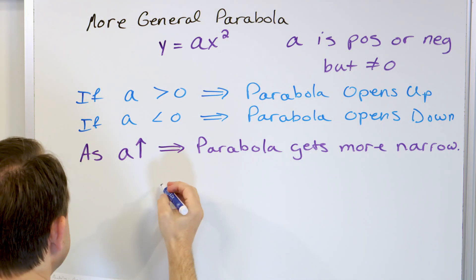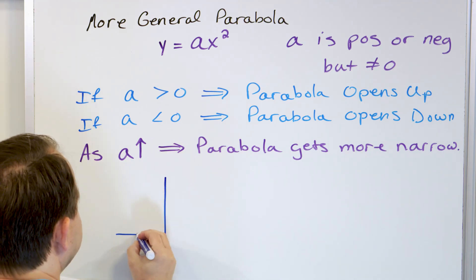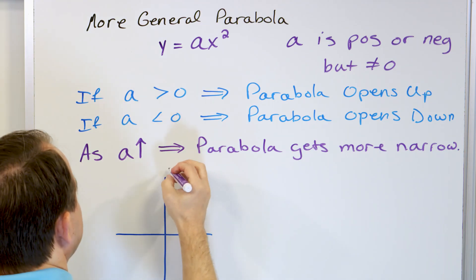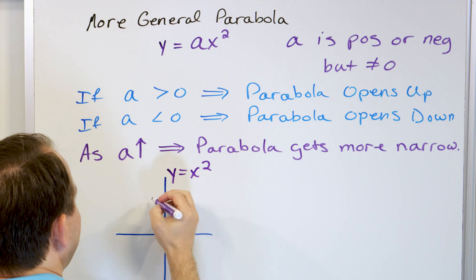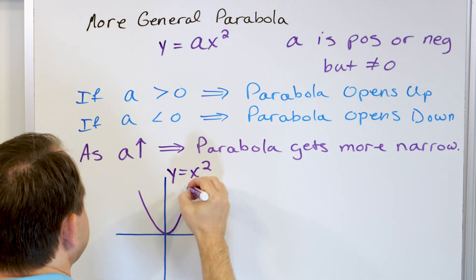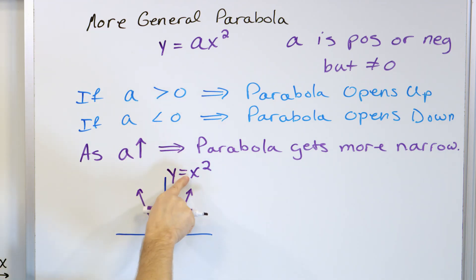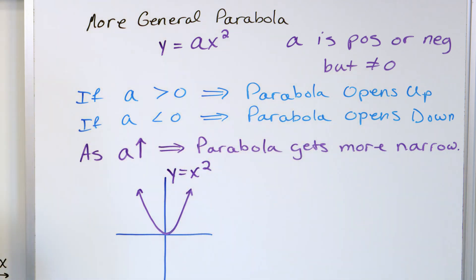Let's start with the basic parabola: y is equal to x squared. This parabola is that basic parabola that opens upward, because there's an invisible one in front of the x squared, which means a is bigger than zero.